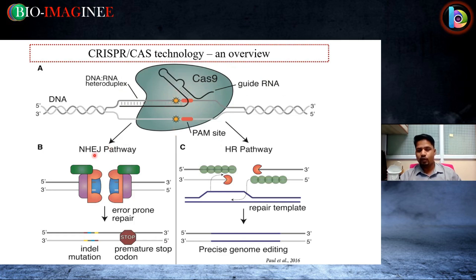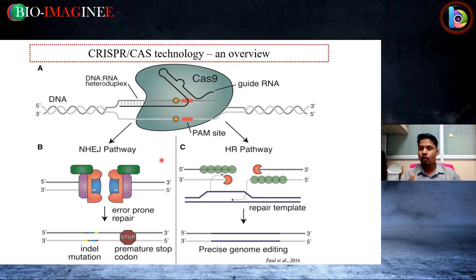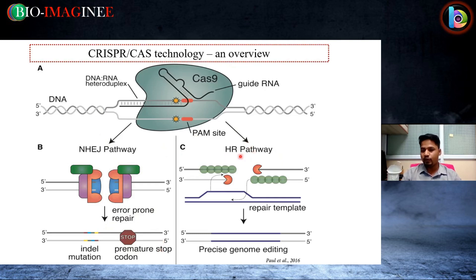After cleavage, the cell follows either the non-homologous end-joining pathway or the homology-directed repair pathway. In the non-homologous end-joining pathway, we can provide some donor DNA, or it can happen randomly — there may be error-prone repair, indel mutations, or premature stop codons. The preferable approach for our study is homology-directed repair, where we provide a repair template for precise genome editing.